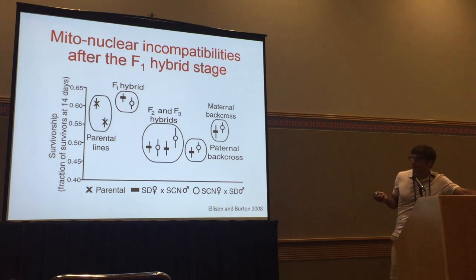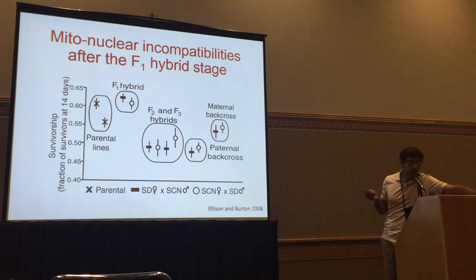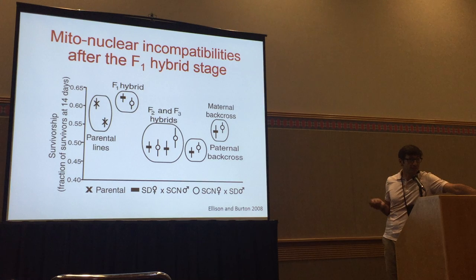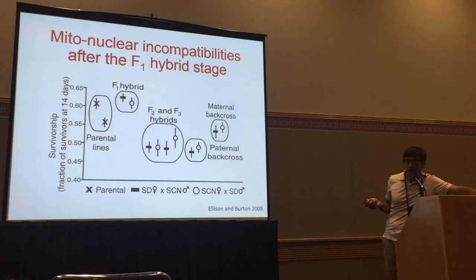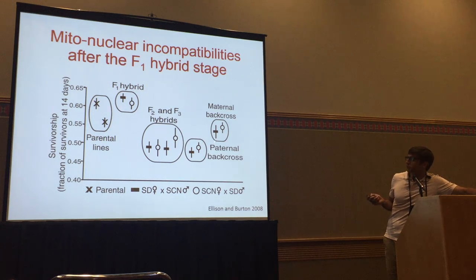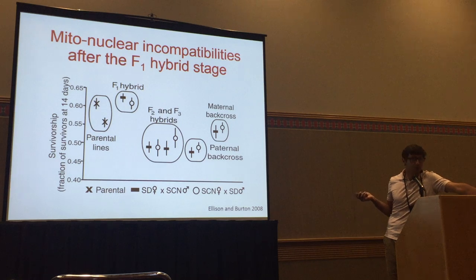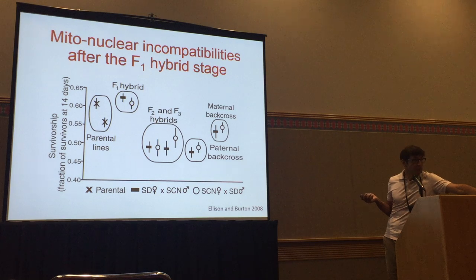When we cross these populations, showing just one measurement of fitness that is similar across other measurements: the parents have a certain level of fitness. When we cross them, the F1 hybrids tend to have higher fitness — we see heterosis. When you cross F1 hybrids, the F2 and F3 hybrids have lower fitness. This is called hybrid breakdown. If you back cross these F2 hybrids to either the paternal or maternal population, in one direction you rescue some of that fitness back, because you back cross to the mother, getting the mitochondria and increasing nuclear allele frequency towards that population, recovering some fitness. This suggests some of the problem is due to mitonuclear incompatibilities, but doesn't say how much nuclear-nuclear incompatibility is involved.